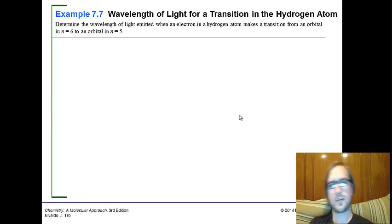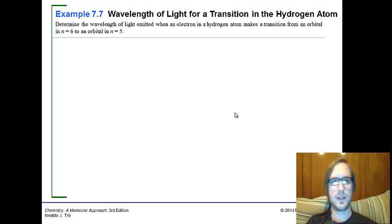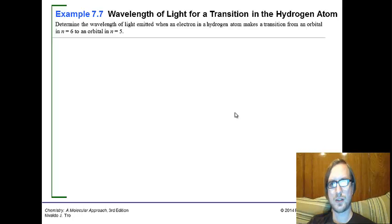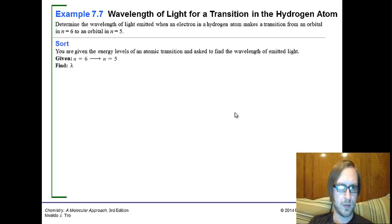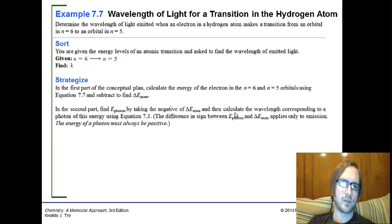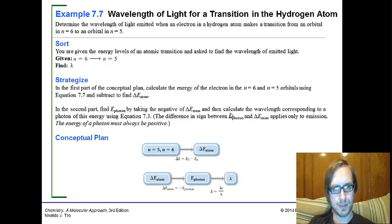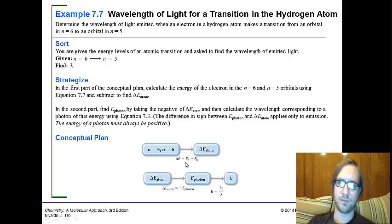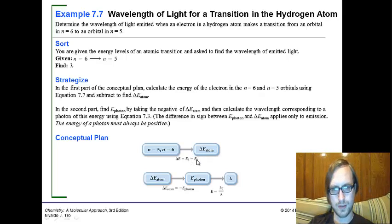All right, wavelength of light for a transition in the hydrogen atom. Determine the wavelength of light emitted when an electron in a hydrogen atom makes a transition from an orbital in n equals 6 to an orbital in n equals 5. You're given the energy levels of an atomic transition and asked to find the wavelength of emitted light. We're going from 6 to 5 in this case. What we need to do is find the difference in energy between the two. When we say difference, that means subtraction.